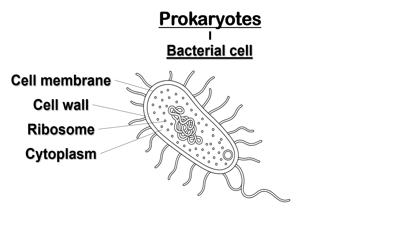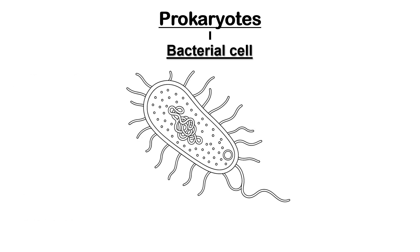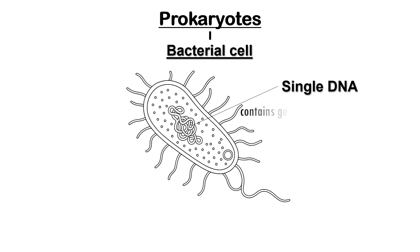However, there are also important differences. Bacterial cells never have mitochondria or chloroplasts. They also don't store their genetic material inside a nucleus. Instead of a nucleus, bacteria have a single circular strand of DNA that floats freely in the cytoplasm. This contains all the genes the bacterium needs to survive and reproduce. You might see this structure labeled as the circular chromosome or the nucleoid, but they all refer to the same thing — a large loop of DNA.